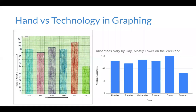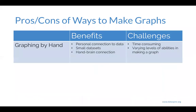Here is the exact same data set — one graphed by hand and one by technology. Like most things in life, there's no clear-cut answer; instead there are benefits and challenges to both. For graphing by hand, some benefits are that students have more of a personal connection to the data since it's a small data set, and there's this physical hand-brain connection when students are actually physically plotting the data points. The challenges are that it can be really time-consuming, and there are varying levels of ability in our students — both from their knowledge of what it takes to make a graph and from where they are on that novice-to-expert spectrum.